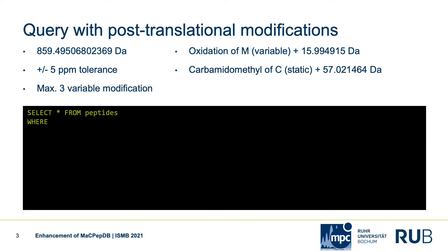Let's make this query more exciting with two post-translational modifications: the variable oxidation of M and the static carbamidomethylation of C, and we allow up to three variable modifications per peptide.